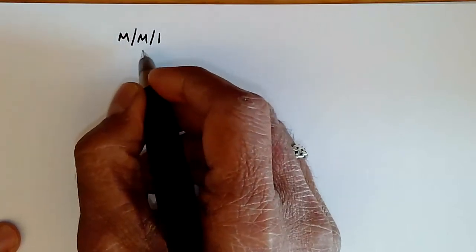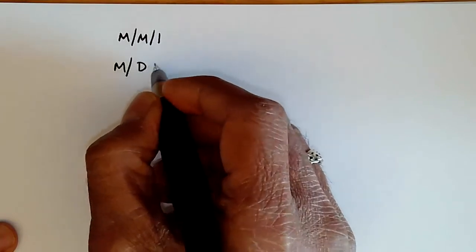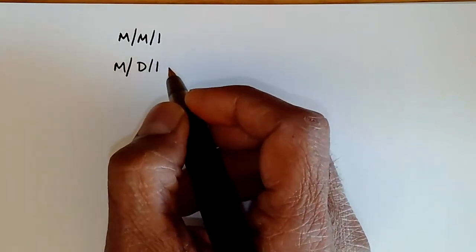What happens if it's not Markov? So we could have a system where the arrivals are Markov, but the departures are deterministic. It's called the MD1Q.